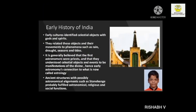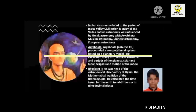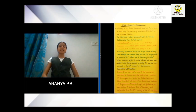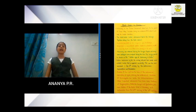Early cultures identified celestial objects with gods and spirits, relating these objects and their movements to phenomena such as rain, seasons and tides. In India, astronomy dates back to the period of Indus Valley civilization. The oldest extant Indian astronomical text is the Vedanga Jyotisha from the Vedic period. Aryabhata, in his magnum opus the Aryabhatiya, propounded a computational system based on a planetary model. Astronomy was advanced during the Shunga Empire, known as the Golden Age of Indian Astronomy.